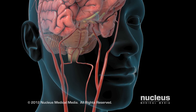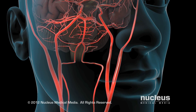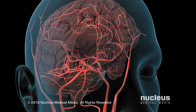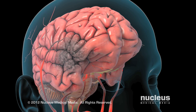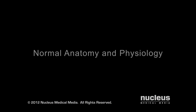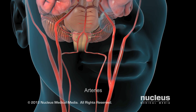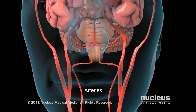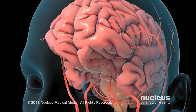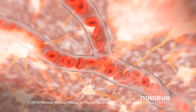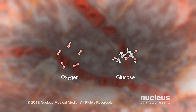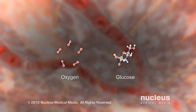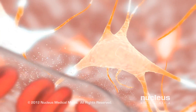A stroke occurs when the blood flow in part of your brain is blocked. After just a few minutes, the starved brain cells begin to die. Normally, the brain receives blood via two major pairs of arteries, which branch throughout brain tissue and supply your brain cells with a constant flow of oxygen, glucose, and nutrients necessary for their functions.